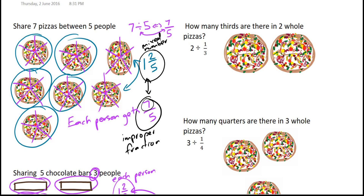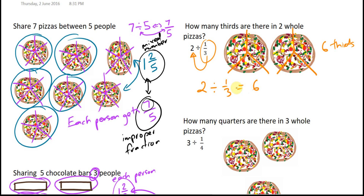This example: 2 divided by 1 third. Another way of saying this is, how many thirds are there in two wholes? So two pizzas — we need to work out how many one thirds are there in these two pizzas. If I split up these two pizzas into thirds, I actually have 6 thirds here. So 2 divided by 1 third equals 6 — there are 6 thirds in two.